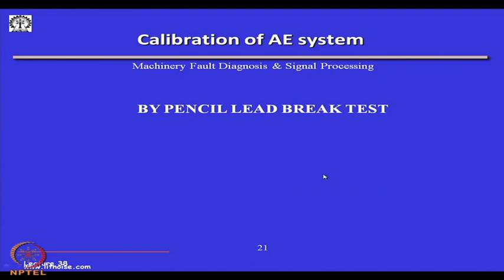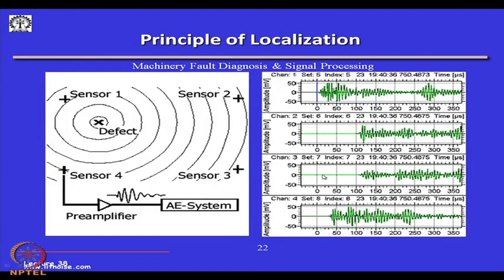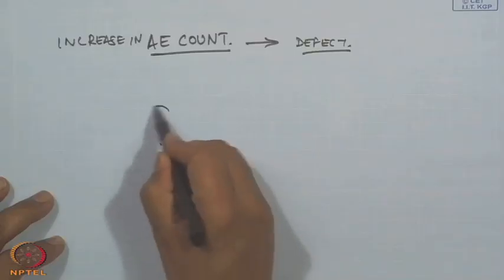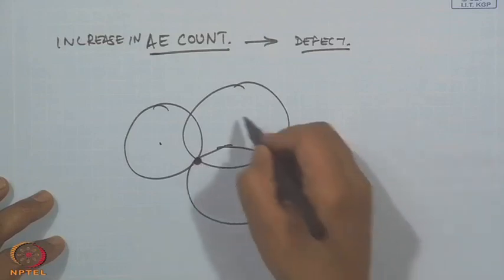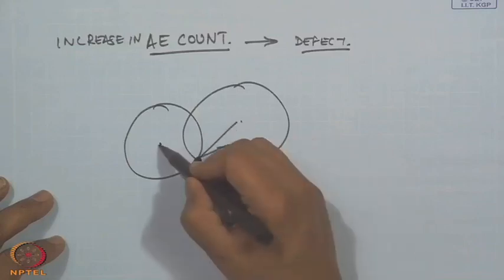AE can be calibrated by what is known as a pencil lead break test. An example shows the principle of location: sensors 1, 2, 3, 4 are placed around a defect. Depending on the time delay for the signal to reach each sensor location, 3D graphics software can triangulate — wherever the three spheres meet in a 2D plane, that will be the location of the defect from each of these sensors.